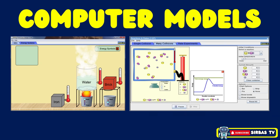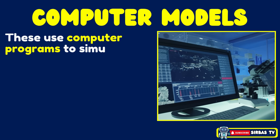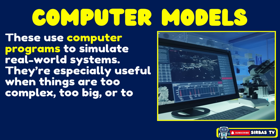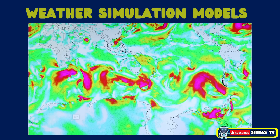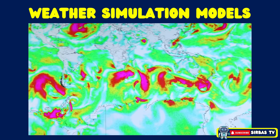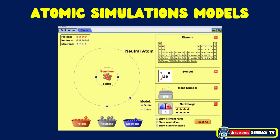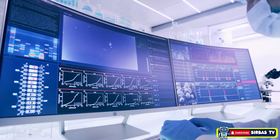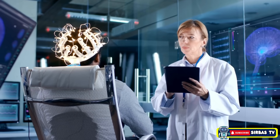Last but not least, computer models. These use computer programs to simulate real-world systems. They are especially useful when things are too complex, too big, or too dangerous to study directly. Weather simulation models predict typhoons and help us prepare for natural disasters. Atomic simulations are computer animations that show how atoms bond in chemistry. Space simulations — NASA uses these models to study how spacecraft will behave in space before they are even launched. Thanks to computer models, we can explore what-if scenarios like how pollution affects climate or how diseases might spread.